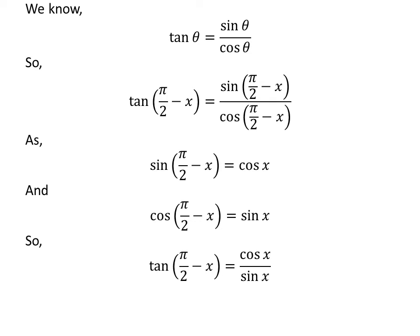So tangent of half of pi minus x is equal to cosine of x upon sine of x. We know cosine of x upon sine of x is equal to cotangent of x. So tangent of half of pi minus x is equal to cotangent of x.